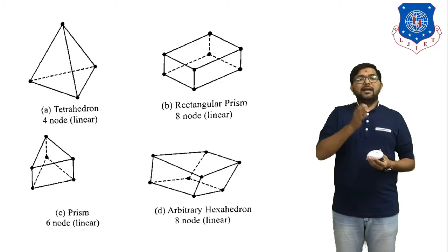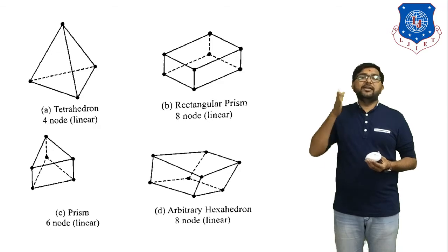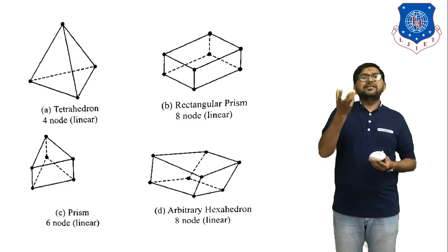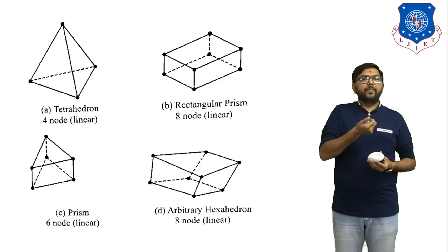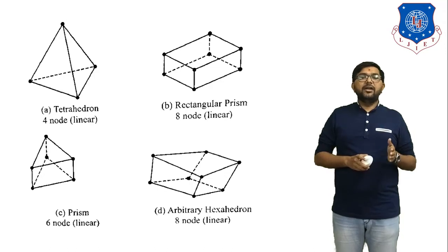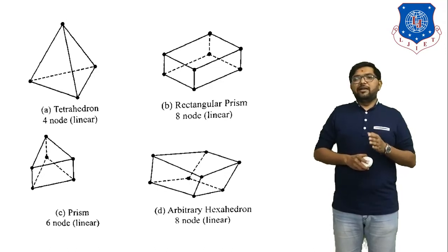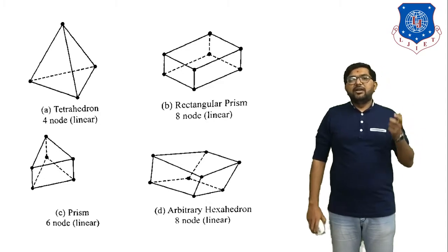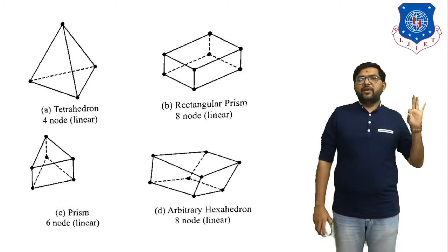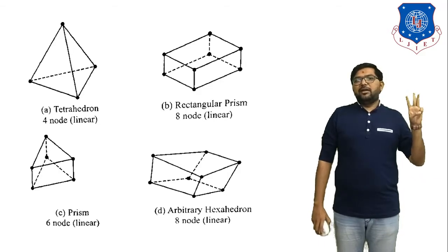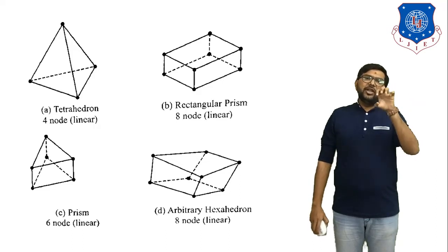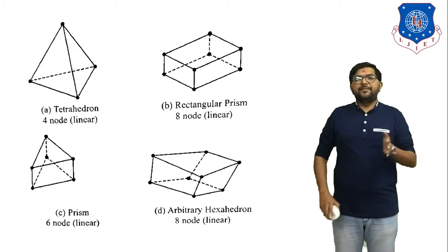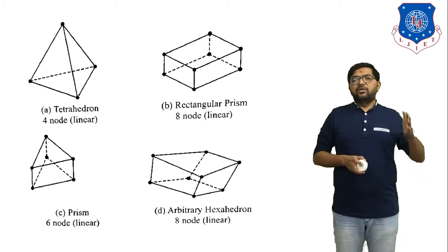Figure C shows a prism with 6 nodes — a prism has 6 corner points, so it has 6 nodes. The last 3D element is the arbitrary hexahedron 8-node linear element — a type of cube with 8 nodes where the shapes of elements are not all the same. These are all the 3D elements. In total there are 3 types of elements: 1D element, 2D element, and 3D element. We select the appropriate element based on the requirement of our analysis.